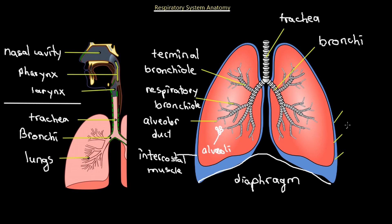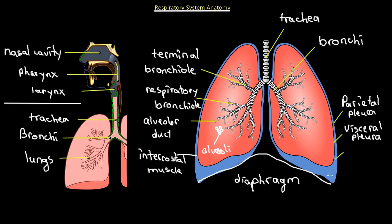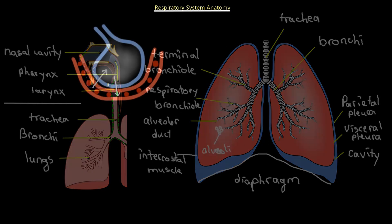There are three more labels: the pleural cavity. There is a space between the two pleural layers — the outer pleural is called the parietal pleura, the inner pleural is called the visceral pleura, and the space in between is called the pleural cavity. That's the general respiratory system anatomy.